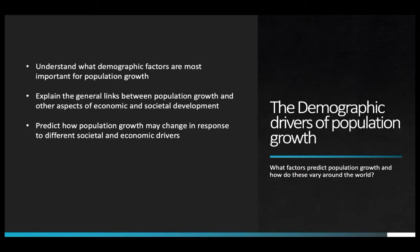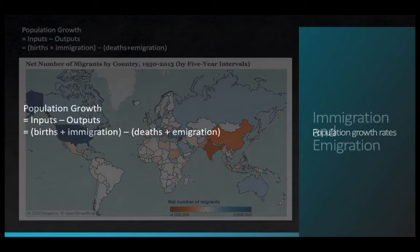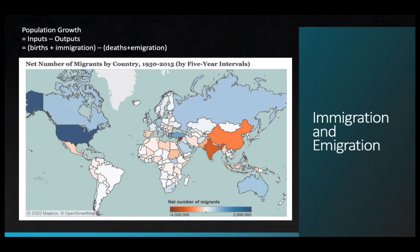The rate of population growth in a country and the related factors can tell us a lot about the challenges that country faces. Part of the goal in this video is to start thinking about these broader interactions between society and the environment. In the most basic formulation, population growth is simply the inputs minus the outputs over a fixed period of time. Inputs are births and immigration, and the outputs are deaths and emigration.